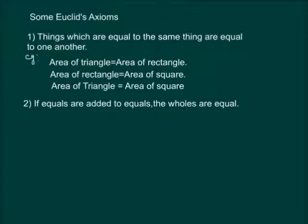Another axiom says that if equals are added to equals, the wholes are equals. For example, if x is equal to y and we add 2 on both sides, then x plus 2 will be equal to y plus 2.